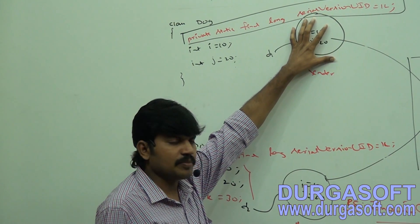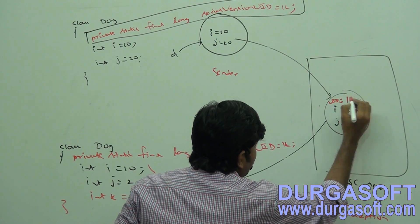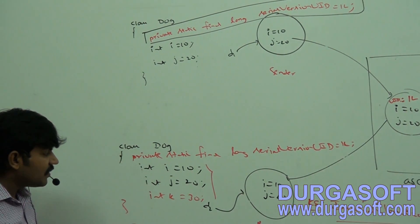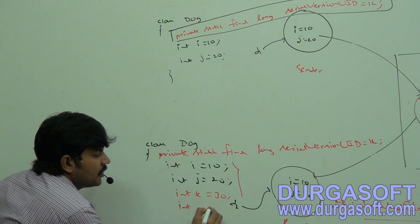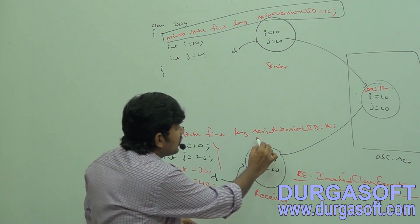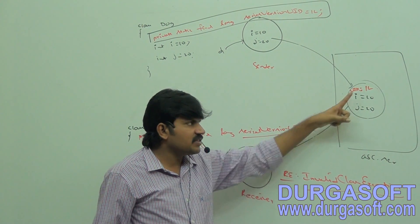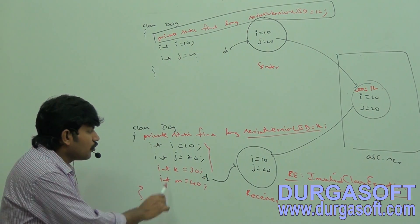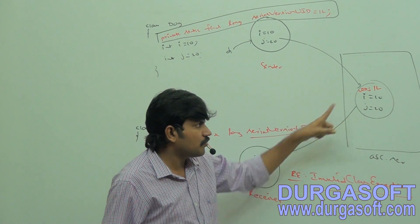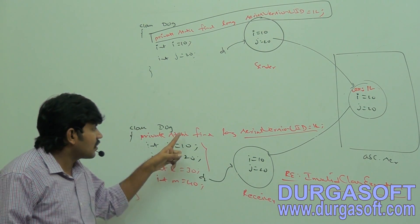Take special care. The sender side JVM creates an object and serializes it — serial version UID 1L gets saved to the file. After serialization, the receiver adds new properties like int k equal to 30 and int m equal to 40. But the receiver side JVM is always going to use our configured serial version UID only — JVM won't generate one. The numbers match. Even though new properties were added, no problem at all, because you are not giving the chance to JVM to generate.